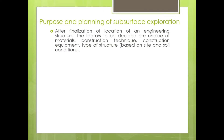After finalization of the location of an engineering structure, certain factors are decided. These factors include the choice of materials — what type of material shall I use for building that particular structure, what construction technique shall I follow, what construction equipment do I need — whether heavy or light machinery — and what type of structure should be constructed based on site and soil conditions.